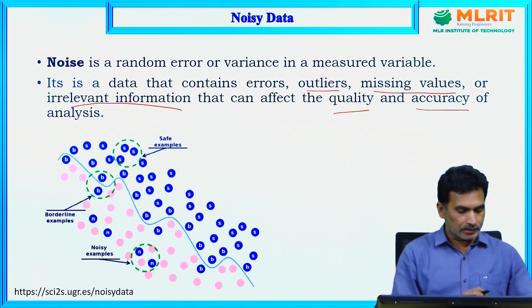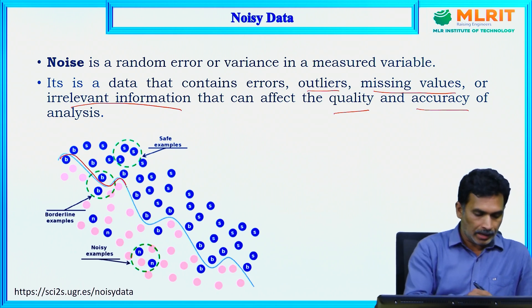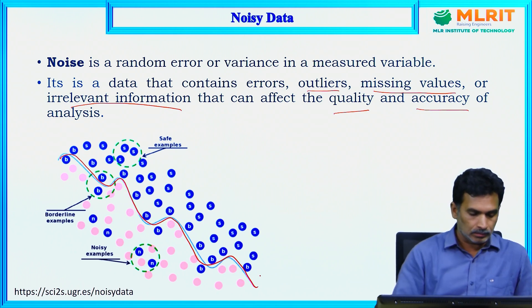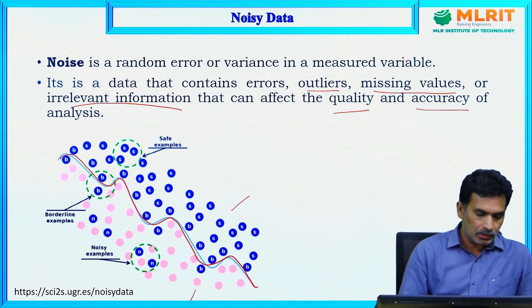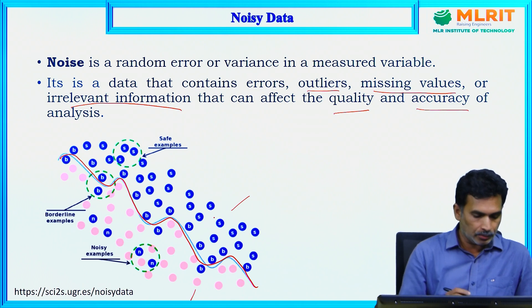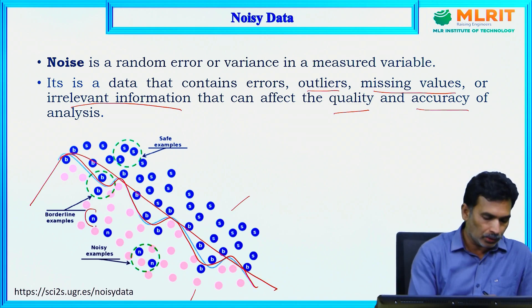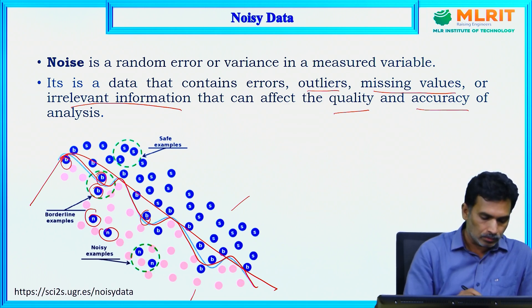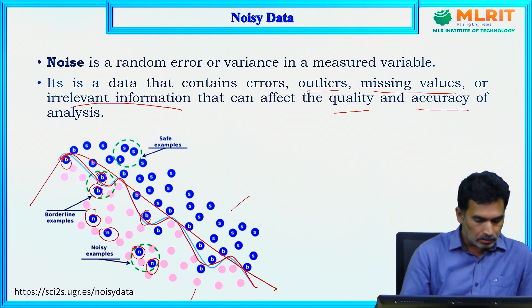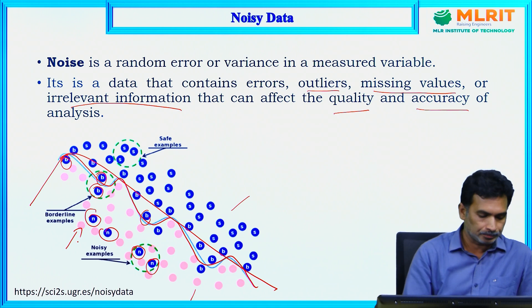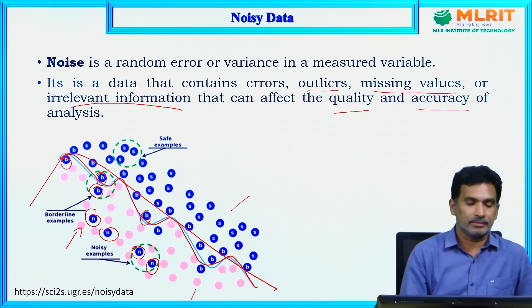For example, in this graph you can see a line separating two groups — a blue color group and another group. On one side there are no data points belonging to the different group, but on the other side there are some data points which do not belong to this group. These are examples of noisy data.